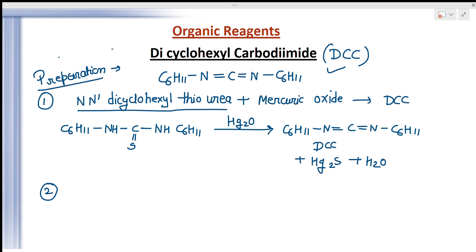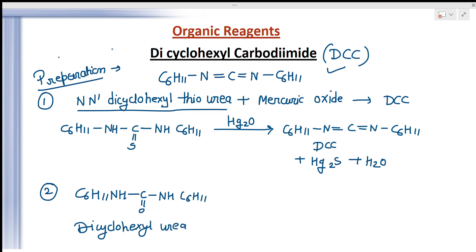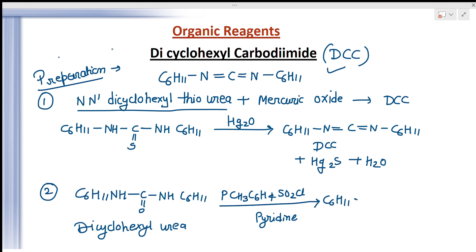Secondly, DCC can be prepared by the dehydration of dicyclohexyl urea with para-toluenesulfonyl chloride. That is, C6H11-NH-C(=O)-NH-C6H11 (dicyclohexyl urea) is treated with para-toluenesulfonyl chloride in the presence of pyridine. Dehydration proceeds and we get C6H11-N=C=N-C6H11 plus H2O.